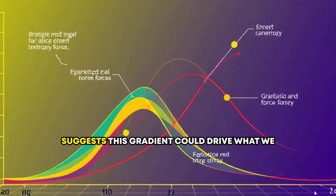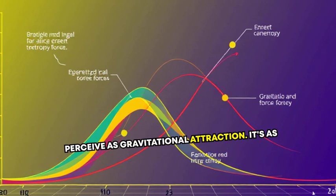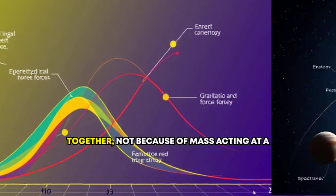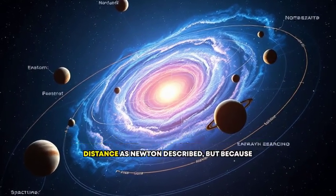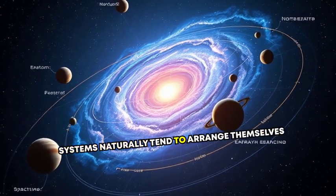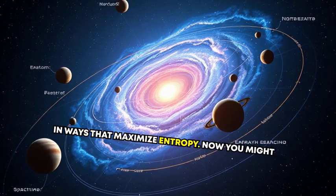Verlinde's theory suggests this gradient could drive what we perceive as gravitational attraction. It's as though space-time itself is pulling objects together, not because of mass acting at a distance, as Newton described, but because systems naturally tend to arrange themselves in ways that maximize entropy.